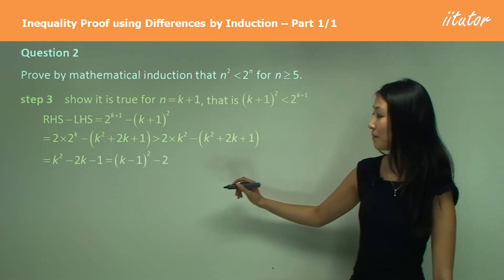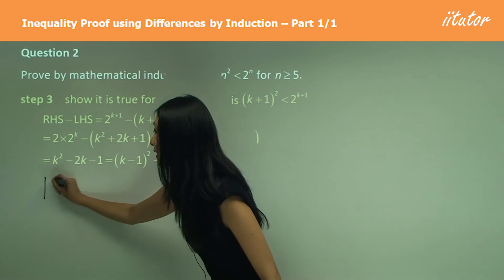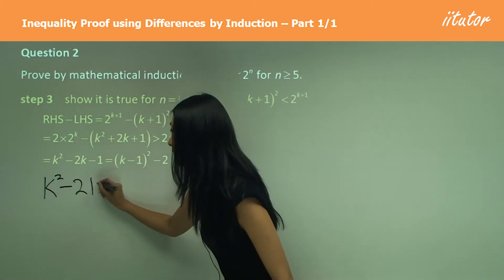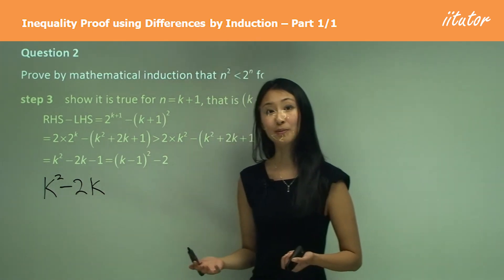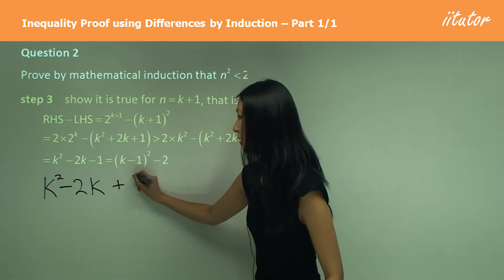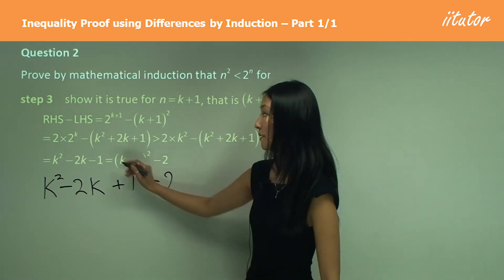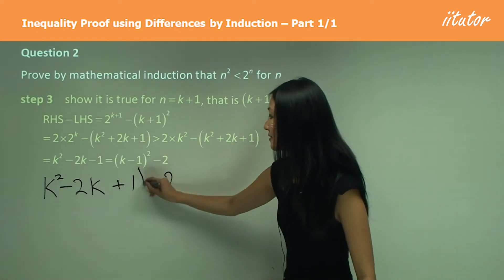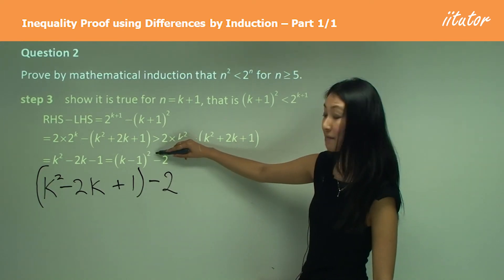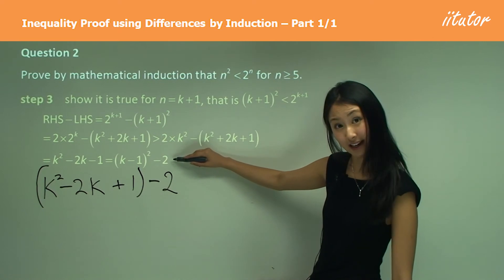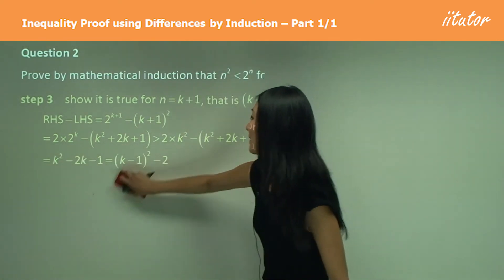Now we want to make a perfect square. We have k squared minus 2k — we take half of the coefficient of k, which is negative 1, and square it to get plus 1. But we can't change the equation freely, so we subtract 2 to compensate. This gives k squared minus 2k plus 1 minus 2, which is the perfect square k minus 1 all squared minus 2.